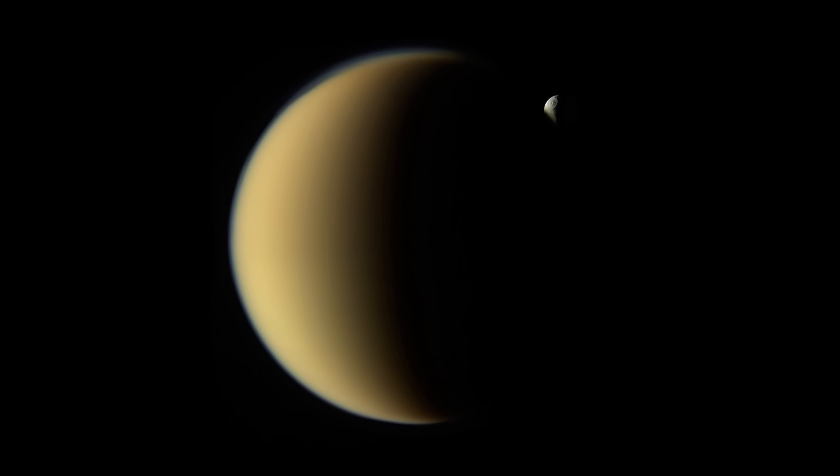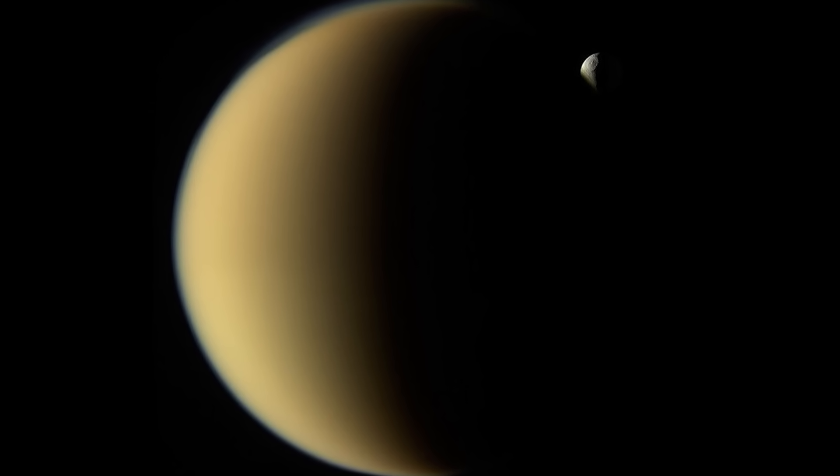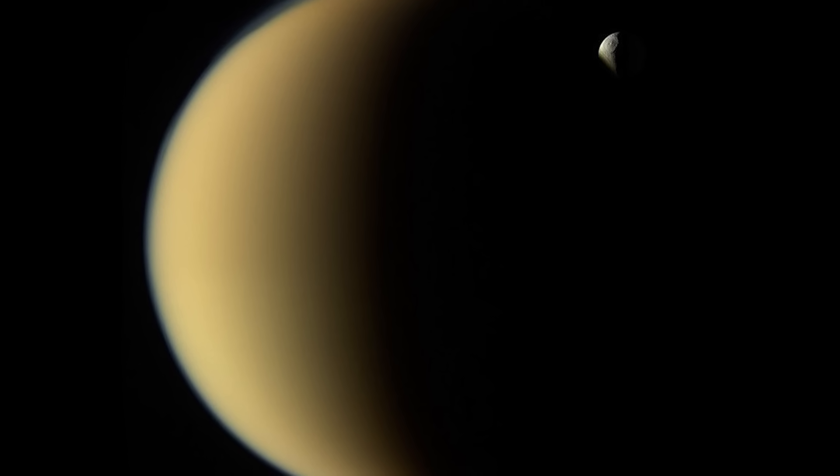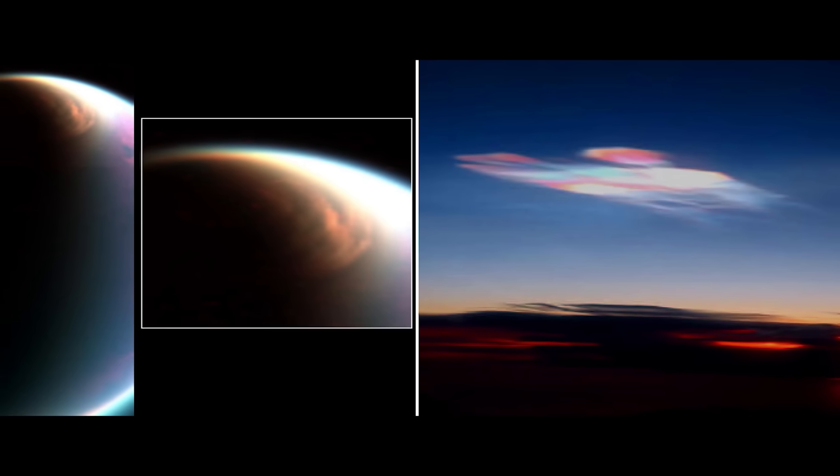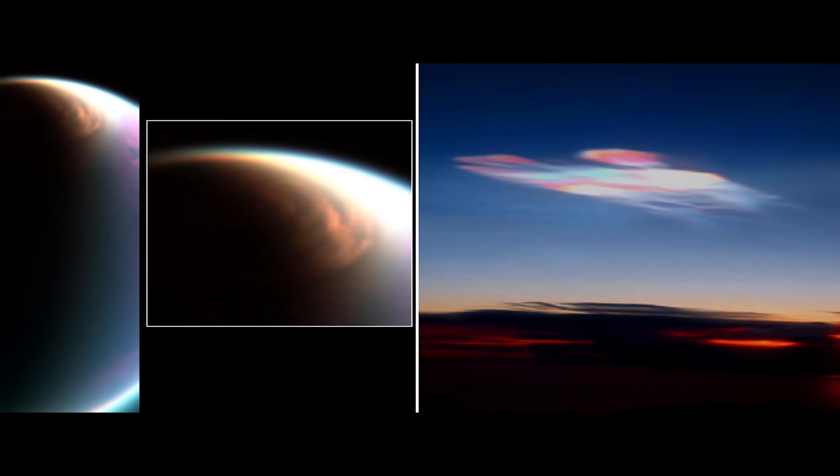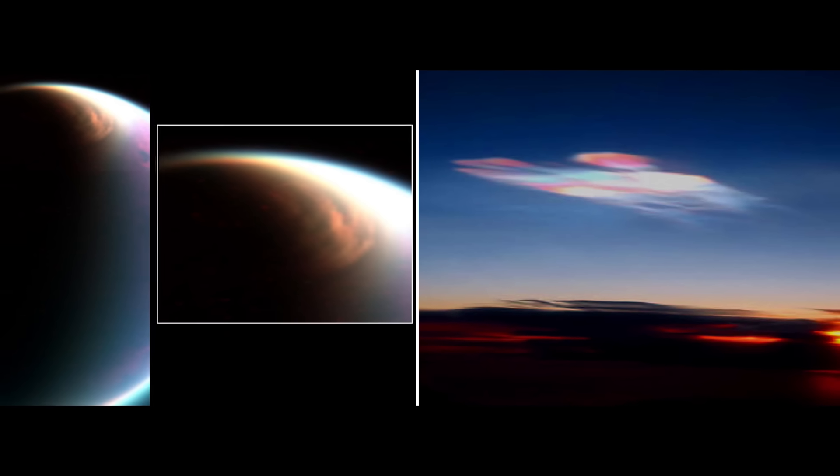But all that the probe was really able to see were the dense orange clouds that surrounded the moon. It was impenetrable. What Pioneer was able to do was investigate what that haze was made of, and it found something very intriguing. A thick atmosphere that was rich in nitrogen. This is very similar to what we have on Earth. The majority of our own atmosphere is also nitrogen.